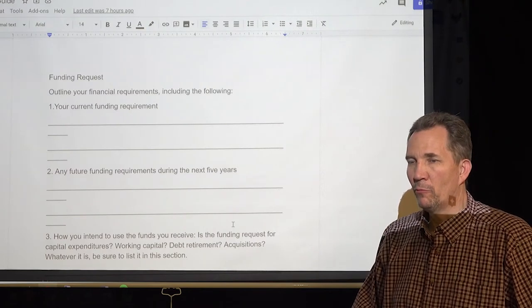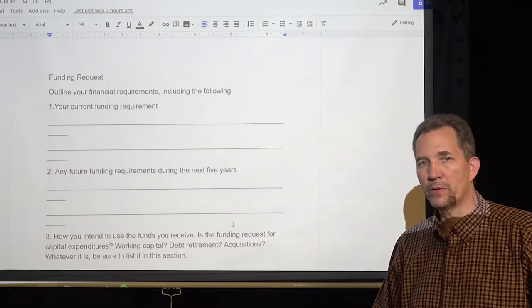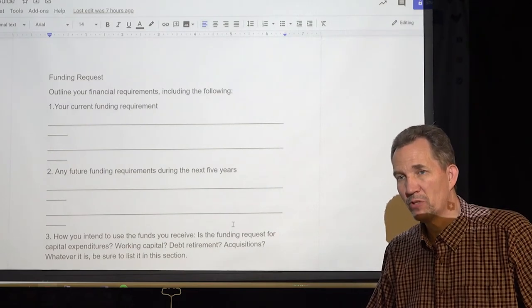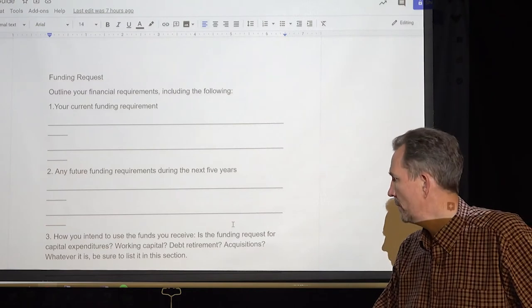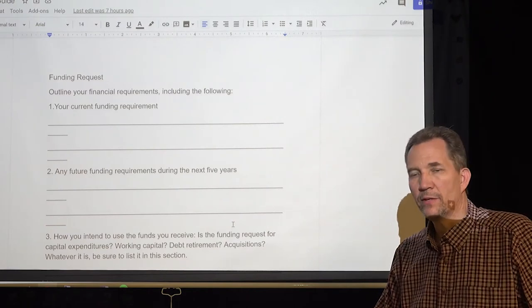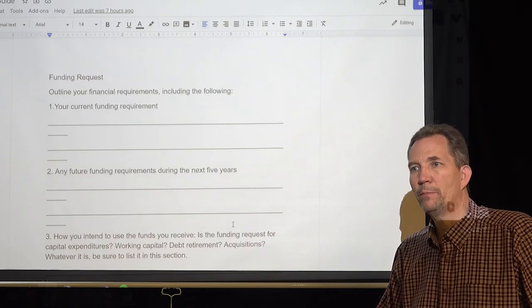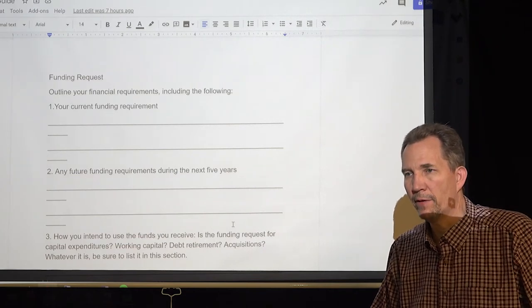But just having more money flow. I just need $100,000 in the bank because we got to make some decisions. Now that would scare off most investors, but some investors actually understand that. Debt retirement. Okay, so we bought this equipment, but we're still paying on it. We still have equipment leases.